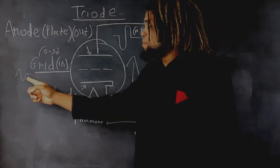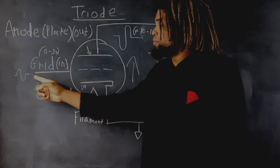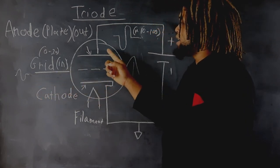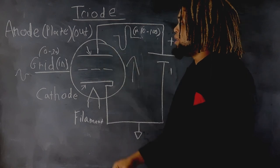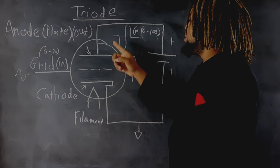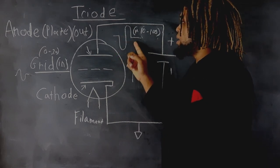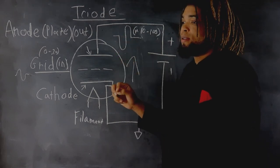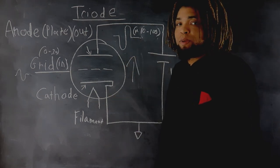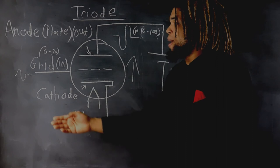So, a positive sine wave coming into the grid, being amplified, and coming out the plate of the vacuum tube will be magnified, but it will be the inverse of what it came in as.